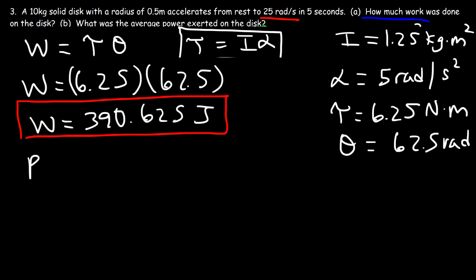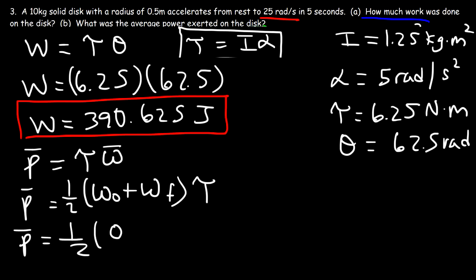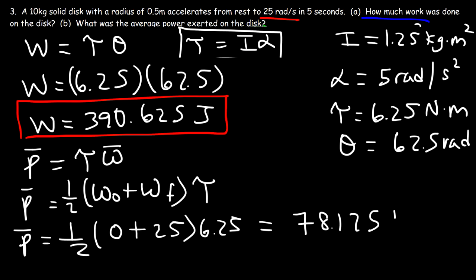To calculate the average power, average power equals torque times the average angular speed. The average angular speed is (initial + final) / 2 = (0 + 25) / 2 = 12.5 radians per second. So: 25 times 6.25 divided by 2 gives an average power of 78.125 watts — the same answer we had earlier, confirming both methods are consistent.